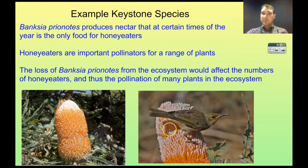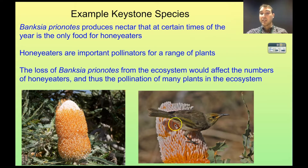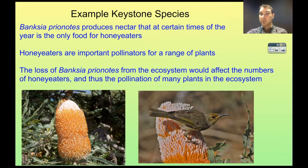If the Banksia prionotes disappears, since it is the only food for honey eaters at this time of year, the honey eater numbers would decrease as well. If those honey eater numbers decrease, the amount of pollination that occurs would also decrease. And if plants aren't getting pollinated, seeds won't be produced and they won't be reproducing. So this one plant species, which doesn't have to be in large numbers in the ecosystem, provides food to a very important pollinator — the removal of the Banksia removes the honey eaters, reduces pollination, which is very important for plant species.